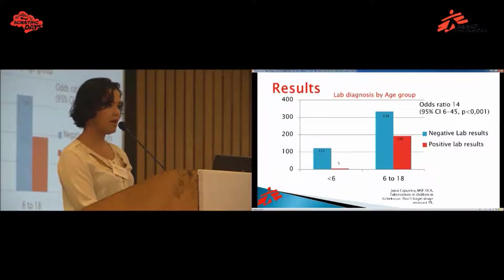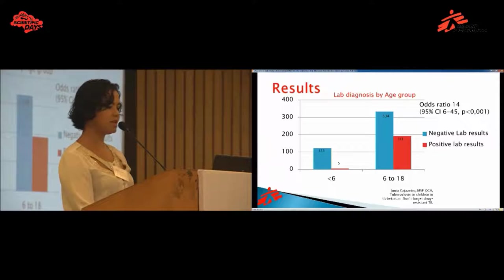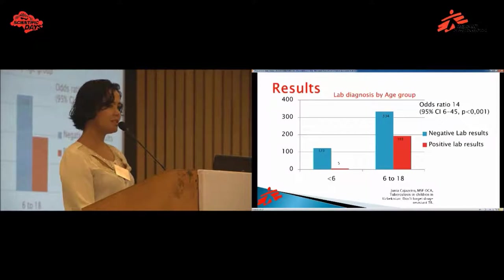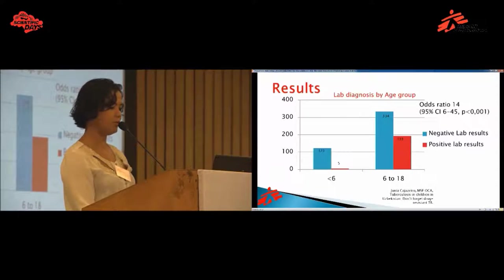We also compared treatment between patients less than 6 years old and those from 6 to 18 years old. The odds ratio between them is 14, with a P-value less than 0.001, meaning that only 4% of children under 6 had positive laboratory results, while 36% of children and adolescents aged 6 to 18 had positive laboratory results.